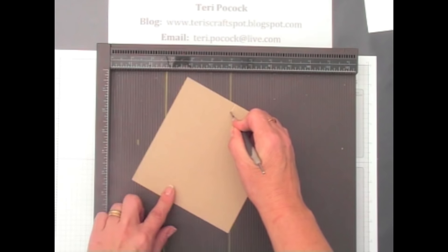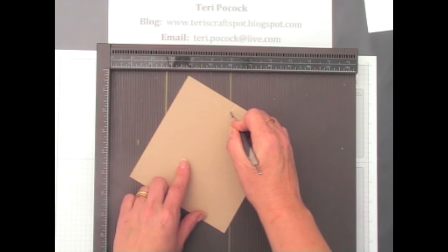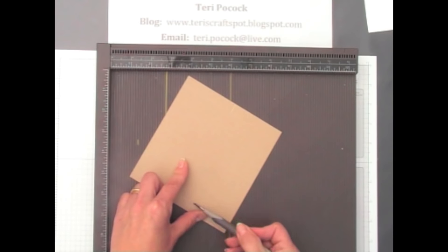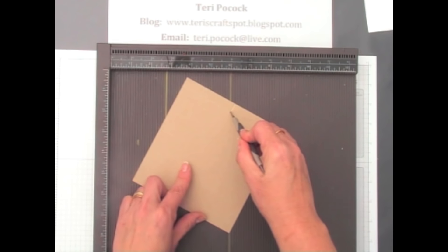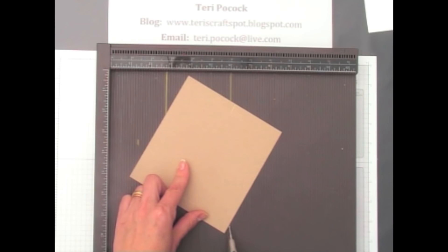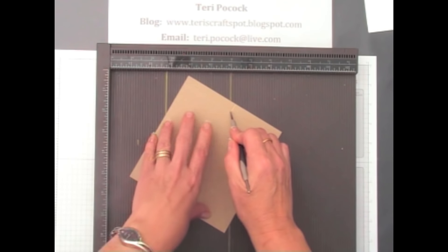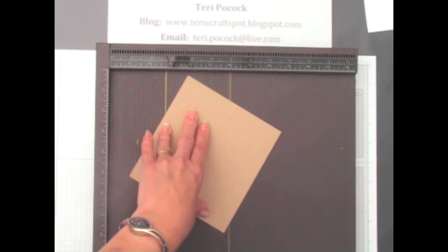Then if you swing your cardstock to the left, you want to line up the bottom horizontal score line with that same groove. Make sure you don't line up the bottom corner of the cardstock because your box won't work. It'll be out. So line up that bottom score line. Make sure it's sat in that groove. Hold your cardstock in place and score down.